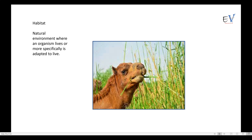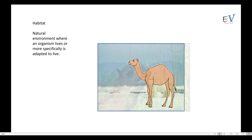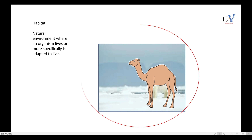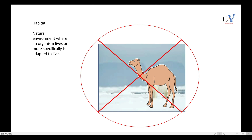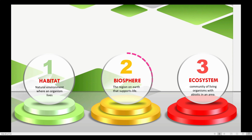All these features have made the camel's survival easy in the desert. If you move this camel from the Thar desert to the Sahara desert, it will survive with minor adjustments. But if you move it from the desert to Antarctica, it will not be able to survive, because its habitat is the desert. When a living being is adapted to live in a particular area or surrounding, that area is called the habitat of that organism.